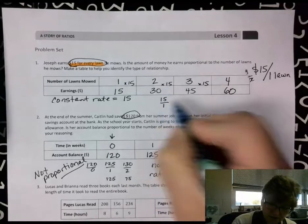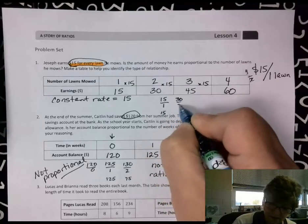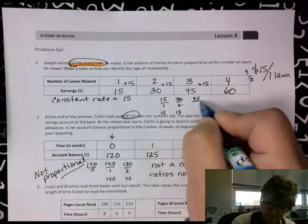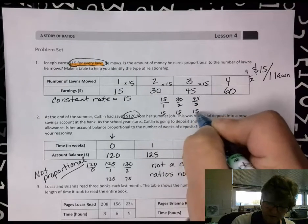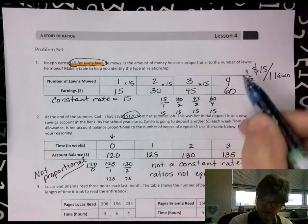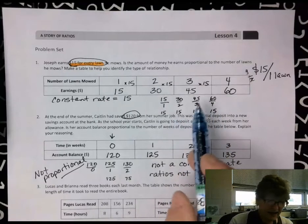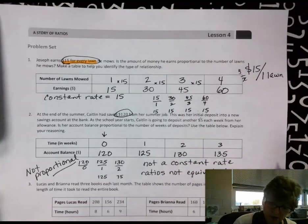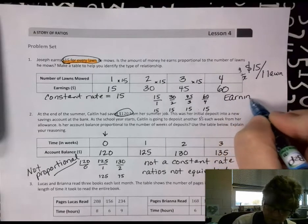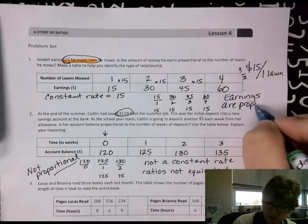And if I look at my ratios, 15 over 1 equals 15, and 30 over 2 equals 15, and 45 over 3 equals 15, and 60 over 4 equals 15. So there's my constant rate, and therefore my earnings are proportional to the number of lawns. So it has a proportional relationship.